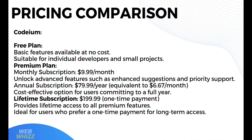Moving on to pricing comparison, starting with Codium. It offers a free plan with basic features available at no cost, suitable for individual developers and small projects. It also has a premium plan with a monthly subscription of $9.99 per month, unlocking advanced features such as enhanced suggestions and priority support. The annual subscription amounts to $79.99 per year, equivalent to $6.67 per month, which is a cost-effective option for users committing to a full year. It also has a lifetime subscription at $199.98, a one-time payment that provides lifetime access to all premium features, ideal for users who prefer a one-time payment for long-term access.